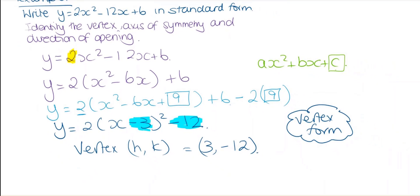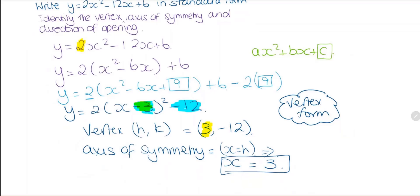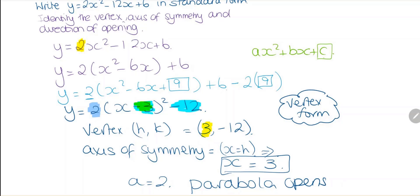We also need to find the axis of symmetry. The axis of symmetry is x = h. Our h value is 3, so the axis of symmetry is the line x = 3. Then we look at our a value, which is 2. Since a = 2 is greater than 0, our parabola opens upwards.